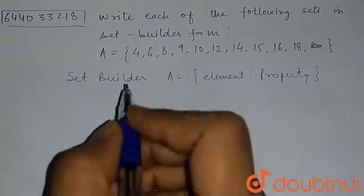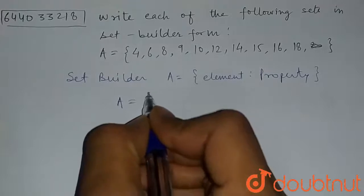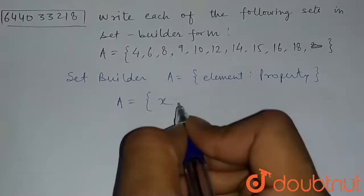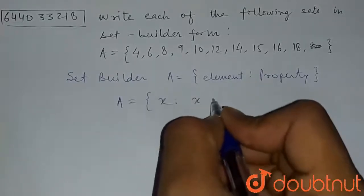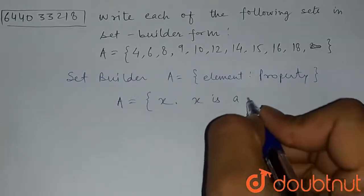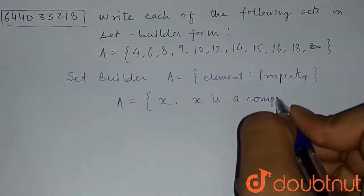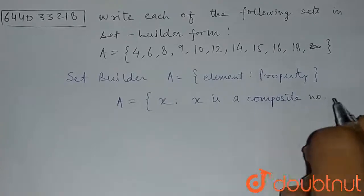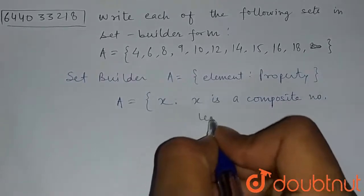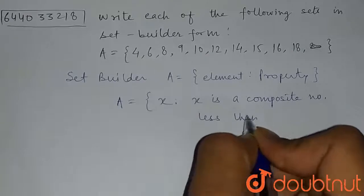So we can write that set A is element x, where x is a composite number less than 20.